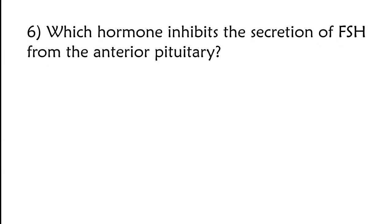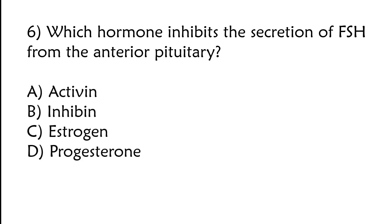Which hormone inhibits the secretion of FSH from the anterior pituitary? A) Activin, B) Inhibin, C) Estrogen, D) Progesterone. The correct answer is option B: Inhibin.